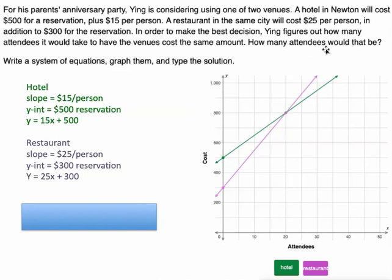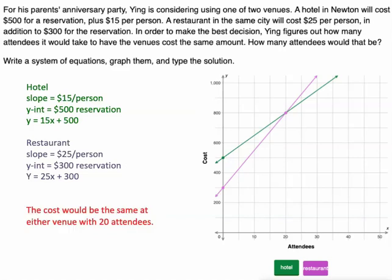But that's not what we're being asked. We're not being asked for how much it will cost. We're being asked for how many attendees, and that is at 20 attendees. So the cost would be the same at either venue with 20 attendees.